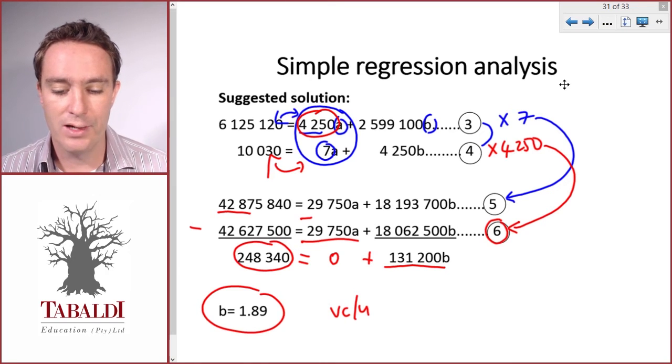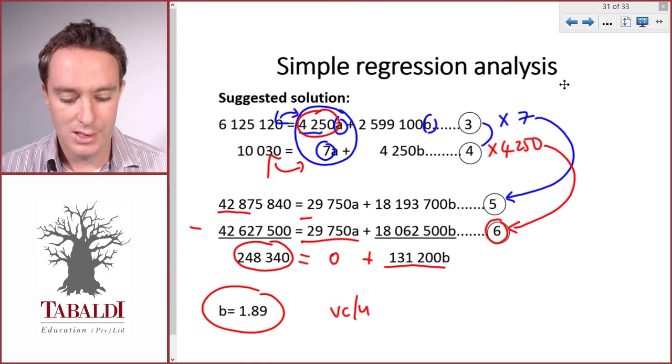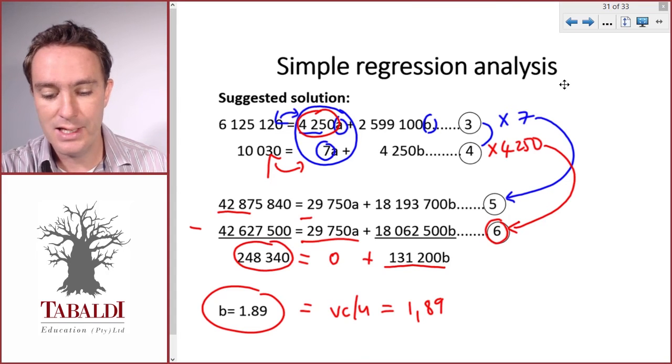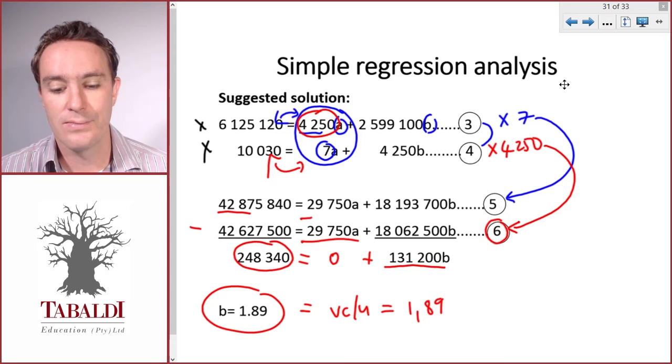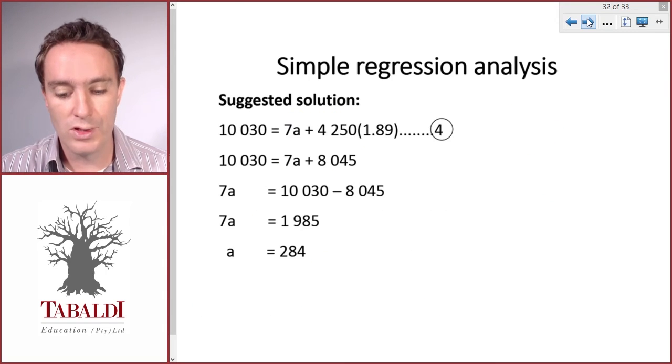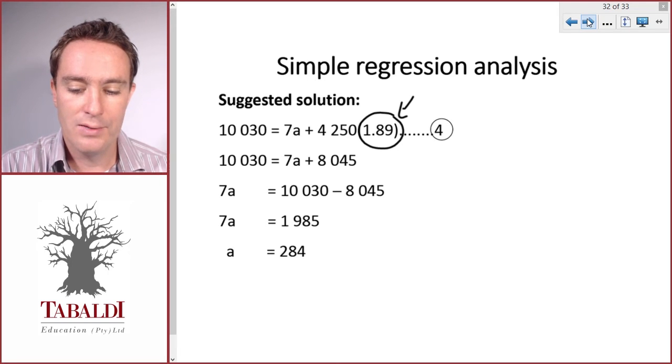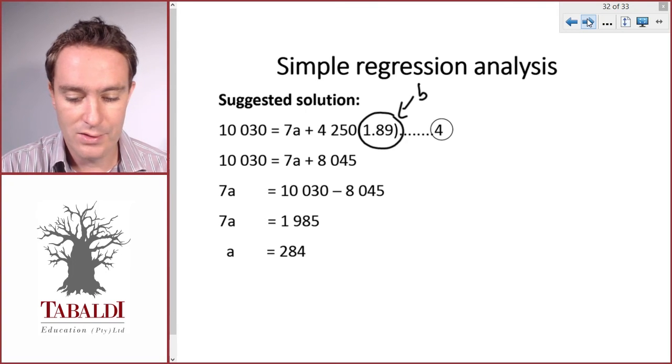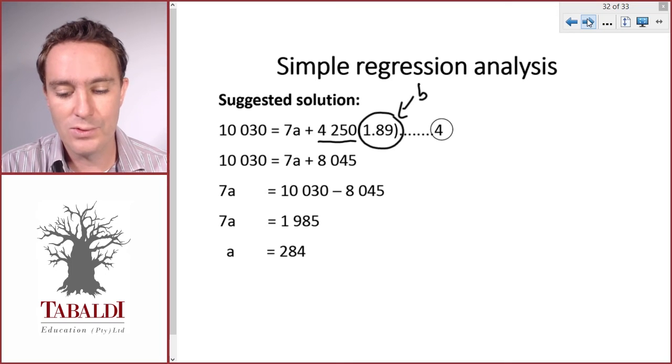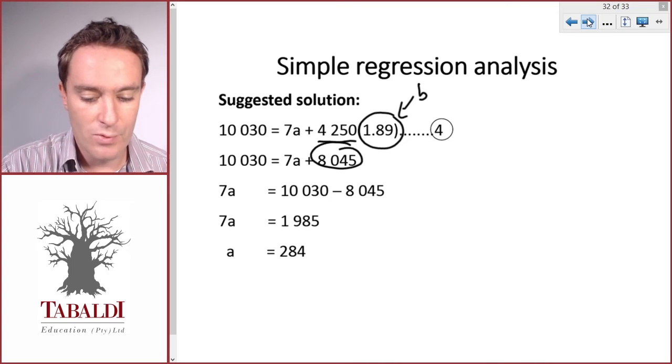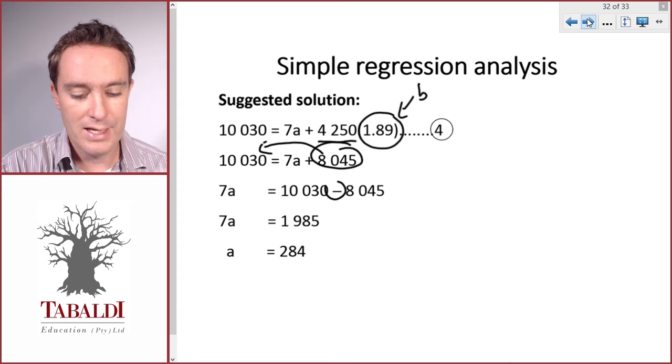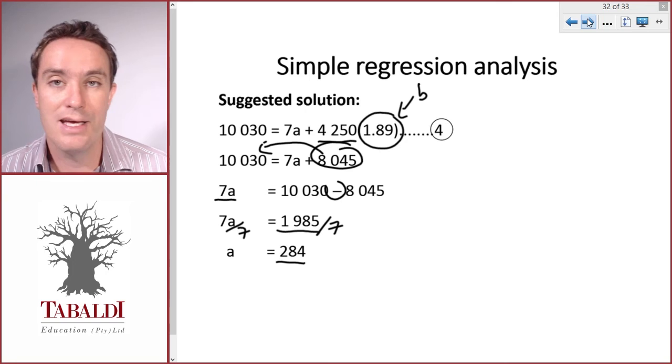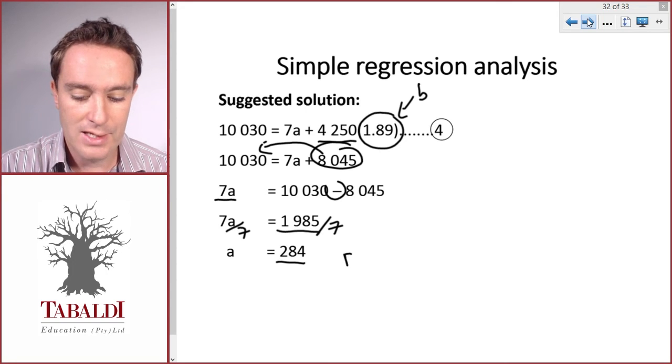Once we have one of the two variables, a or b, we can calculate the other one. We have b, which equals 1.89. Now we can substitute that into any of these two calculations and solve for a. I'm going to use the smallest one, it's going to be easier to work with. Here we've input b into the formula. We can just now solve for a. 4250 times 1.89 is 8045, and we can carry that over, so it becomes a negative. That leaves 7a equals 1985. We can divide by 7 on both sides, which will leave us with a equals 284. That is our fixed cost.